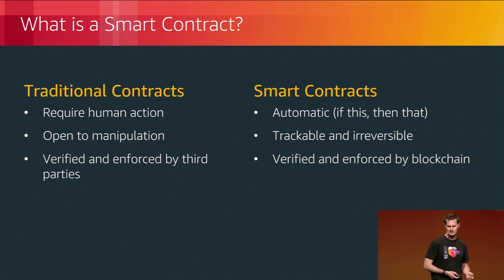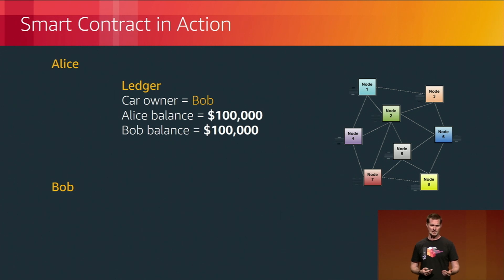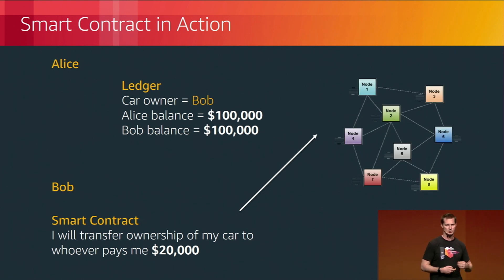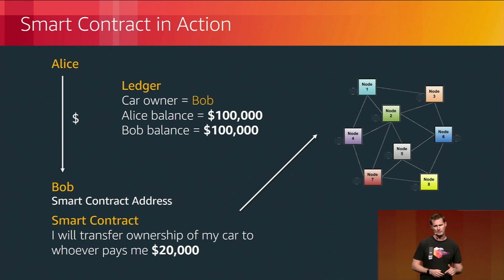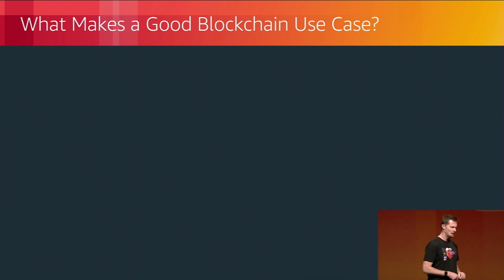A traditional contract requires verification and enforcement by a third party — if someone breaks a contract, you sue them. With a smart contract, because it's executed automatically and enforced by the blockchain, once it's executed there's nothing you can do to unexecute it. For example, Bob owns a car and writes a smart contract saying he'll transfer ownership to anyone who pays him twenty thousand dollars. Alice sends 20K to the smart contract address, the ledger updates automatically — Alice owns the car, her balance drops 20K, Bob's increases — all non-reversible.